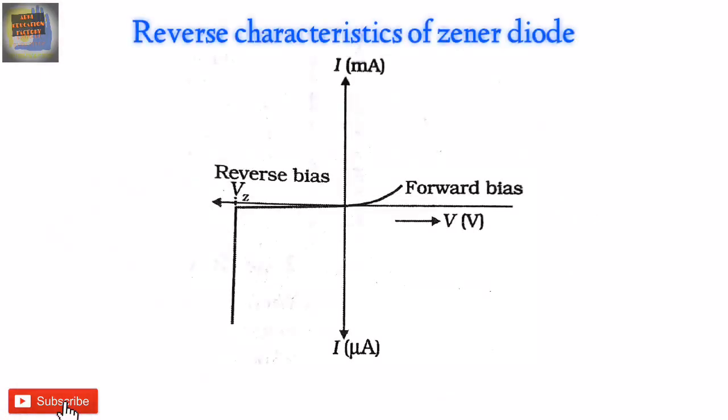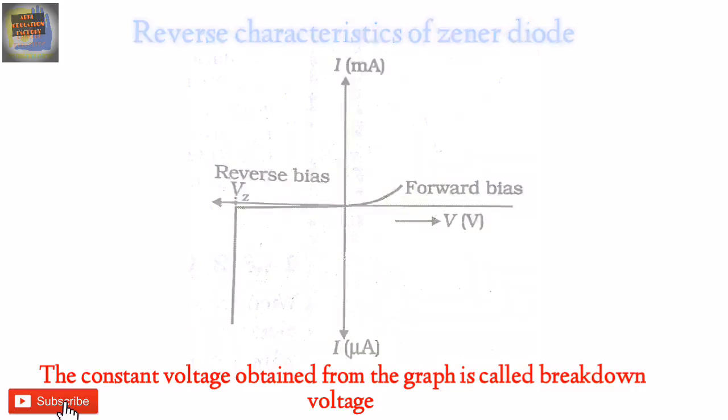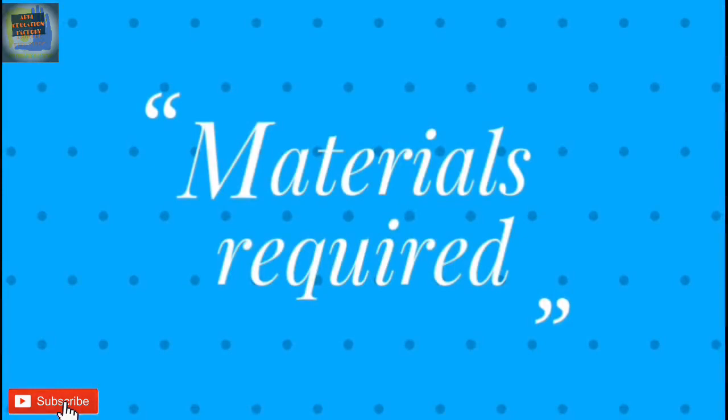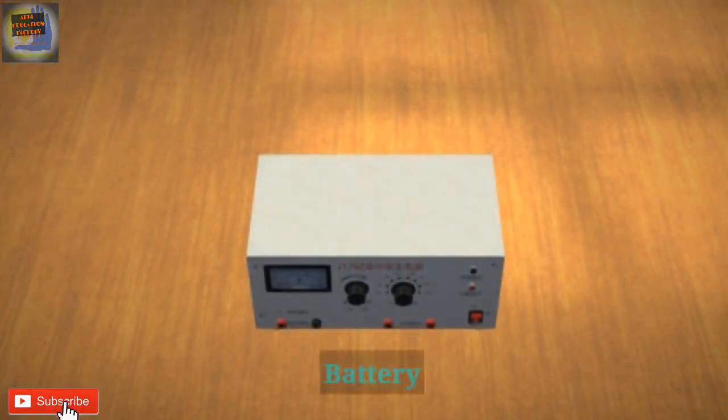Reverse Characteristics of Xenor Diode. The constant voltage obtained from the graph is called breakdown voltage.